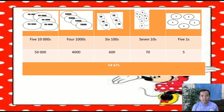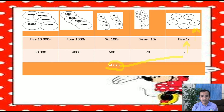By using the number disk, we have 10,000 disks, 1,000 disk, 100 disk, 10s disk, and 1s disk. For 54,675, let's start. This is the 1's place. We have 5 ones, so in the number disk, create 5 disks of 1.